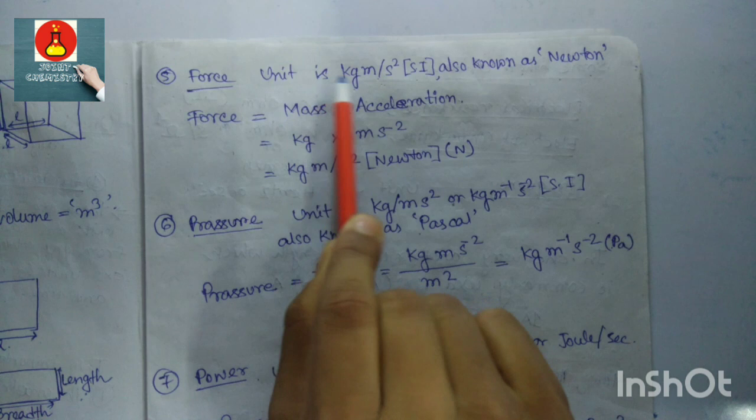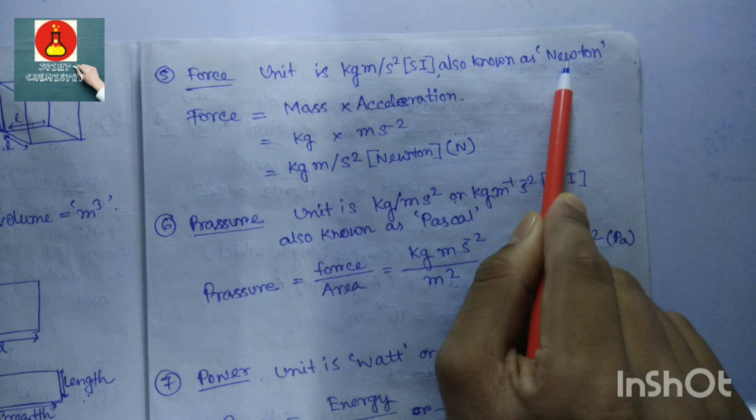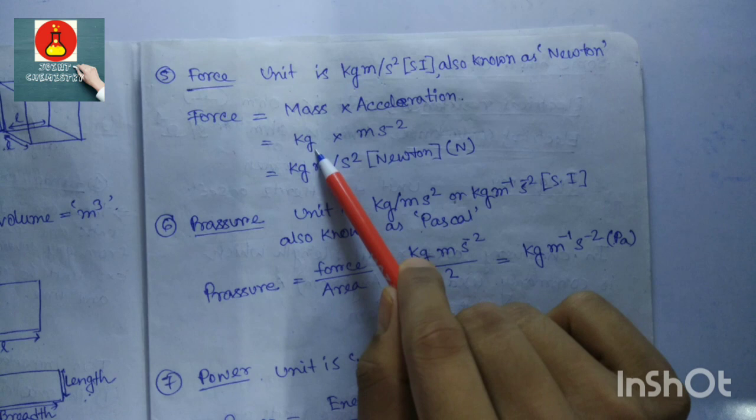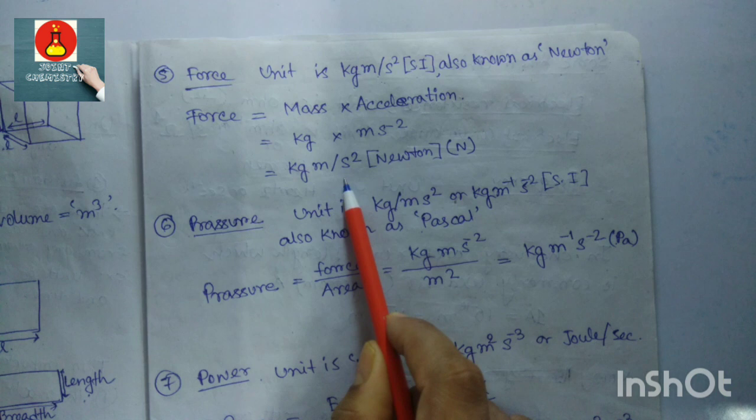Force: the SI unit is kg·m/s², also known as Newton. Force equals mass times acceleration. Mass has unit kg and acceleration has unit m/s², so the total unit is kg·m/s², which is a Newton.